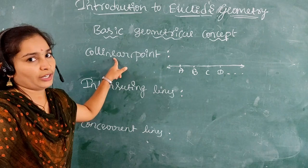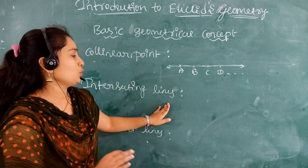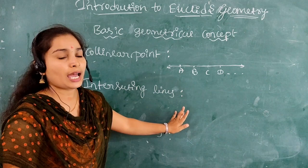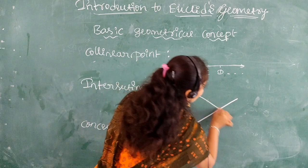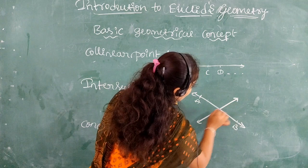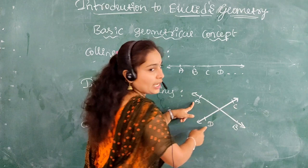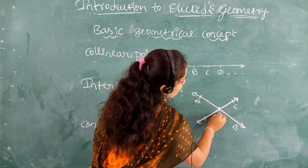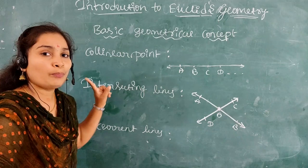The next concept is intersecting lines. Any two lines that have a common point are intersecting lines. For example, line AB and line CD have a common point O, which we call the intersecting point.